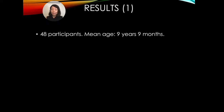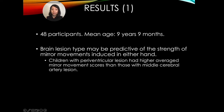There were 48 participants in the end of the study, with a mean age of 9 years and 9 months. Importantly, we found that brain lesion type may be predictive of the strength of mirror movements induced in either hand in our population. Particularly, children with paraventricular lesion are more likely to have higher mirror movement scores than those with middle cerebral artery lesion.